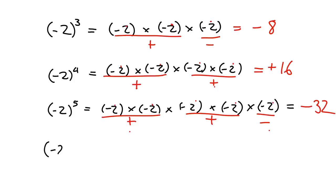We can carry on like this forever. Think about negative 2 to the power of 6 — would that end up being positive or negative? You can pause the video and work it out. Then try negative 2 to the power of 7 as well. I want you to try those for yourselves and see the pattern of when you come to a positive answer and when you come to a negative answer. You can always ask a facilitator if you can't see the pattern.